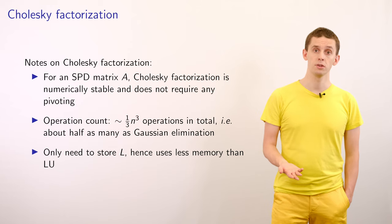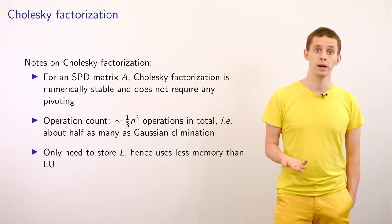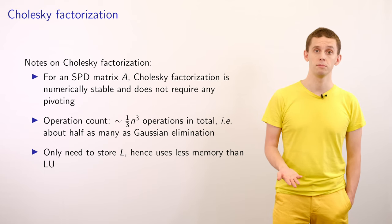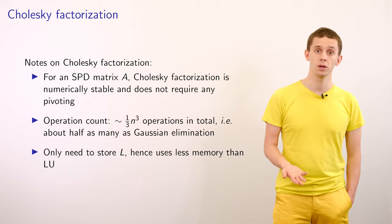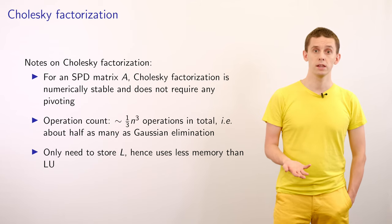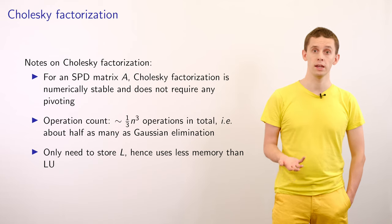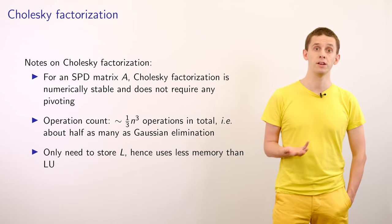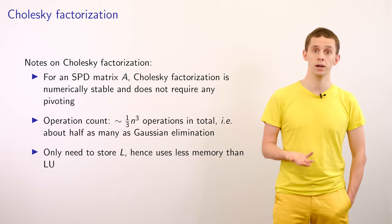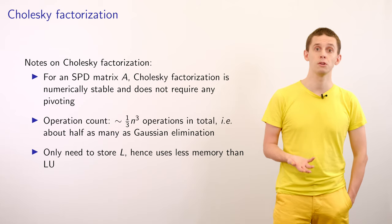This leads to an algorithm bearing similarity to our previous LU factorization. There are several notes on the Cholesky factorization: for an SPD matrix A, it is numerically stable and does not require any pivoting. The operation count is n³/3, about half the operations required for Gaussian elimination. Finally, we only need to store one factor L rather than both L and U — this makes sense because a symmetric matrix has roughly n²/2 degrees of freedom rather than n², so it can be factorized using just a single triangular factor.